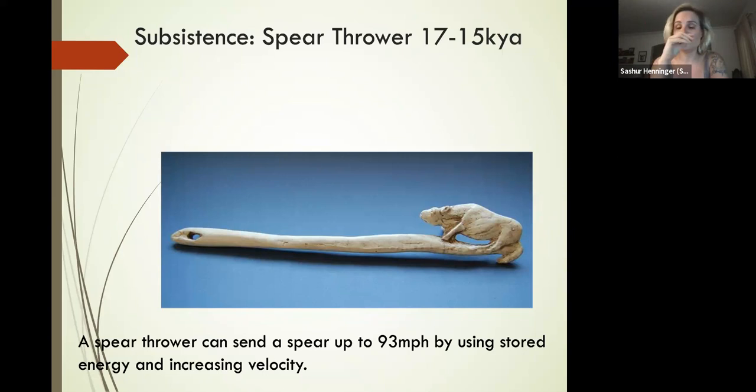With the bone-tipped spear, this can send the spear up to 93 miles an hour using stored energy, increasing velocity so you are going to penetrate.